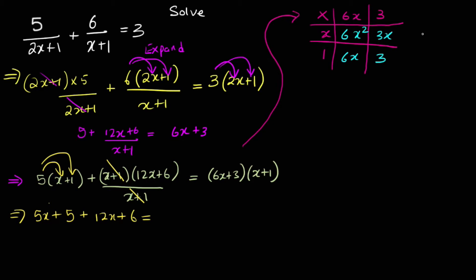How do I simplify that now? That equals 9x plus 3. So that will equal to 6x squared plus 9x plus 3. Then what do I do? We collect like terms again. So 12x plus 5x, that's going to give you 17x. So be careful of the sign. 12x plus 5x gives you 17x plus 11. 6x squared plus 9x.